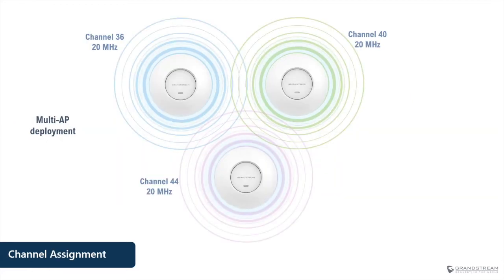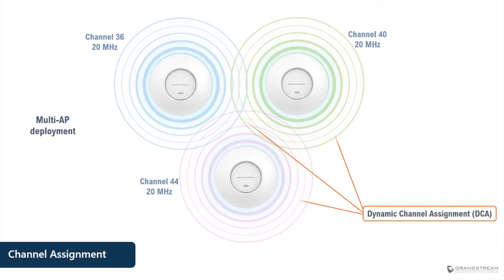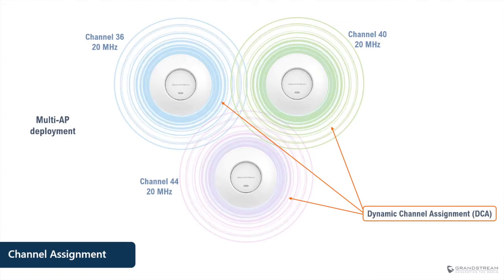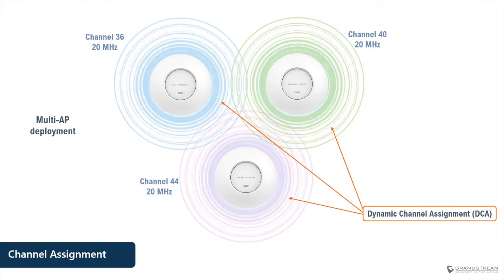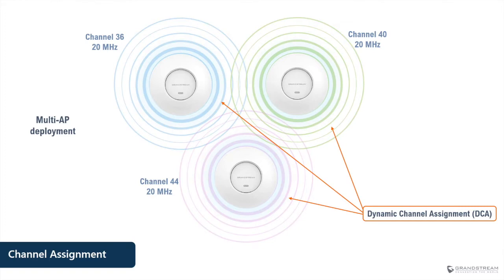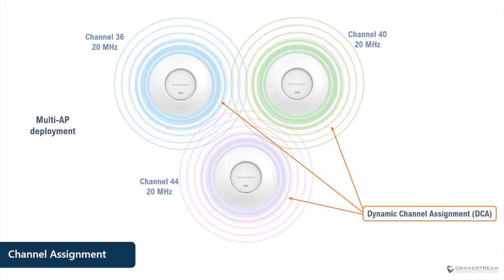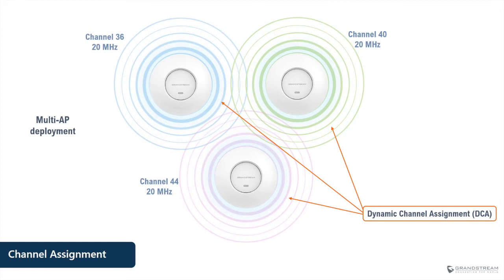Another feature built into Grandstream access points is DCA — Dynamic Channel Assignment — which is a mechanism that adjusts channel assignments for the access point to optimize Wi-Fi performance and avoid co-channel interference among access points. In other words, DCA helps detect and avoid interference when two adjacent access points are using the same channel.